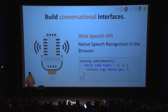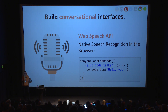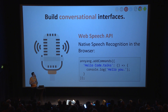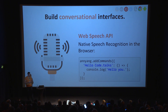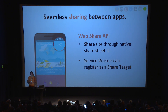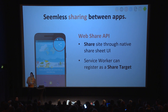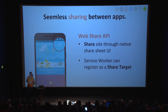Conversational interfaces are quickly building up — the Web Speech API leverages the browser natively to register commands and call a callback in reaction. For example, a small framework around this API could teach the browser to call a callback anytime you say 'hello CodeTalks.' Then there's the Web Share API: sharing has always been a problem for web apps because you cannot share content between native and web apps. With this API you can register as a target for sharing — you can share a PDF into your Progressive Web App and also share from your PWA into a native app.